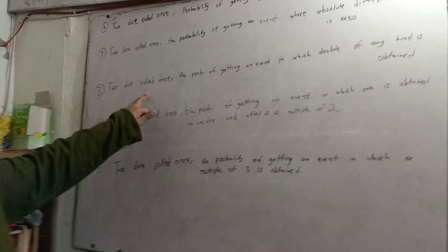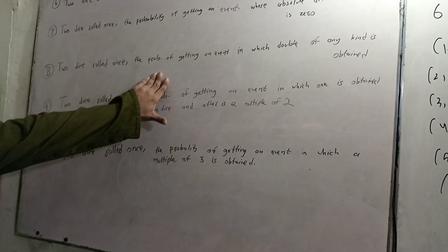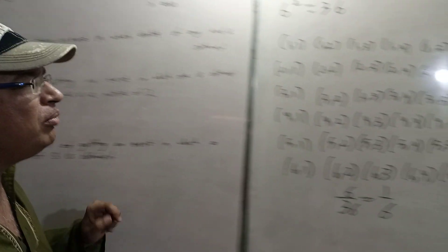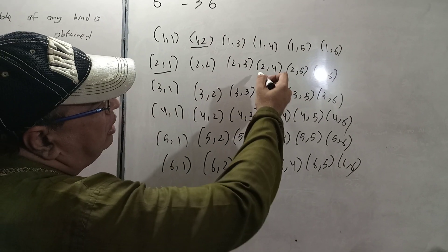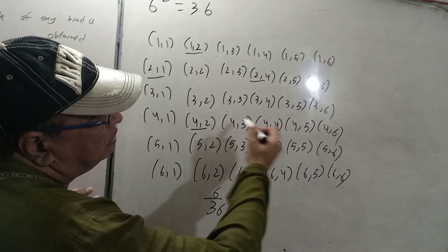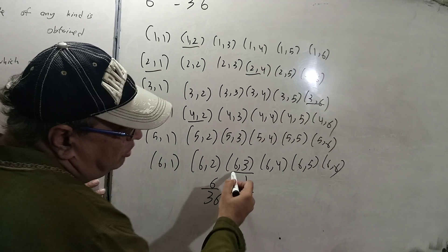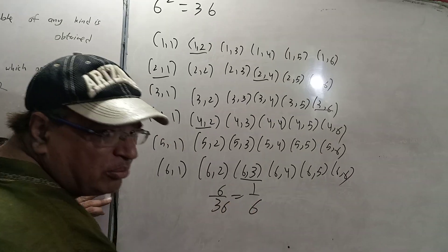Next, two dice rolls, probability of getting an event in which double of any hand is obtained. Like (1,2), (2,4), (3,6). The answer is 6 upon 36, which equals 1 by 6.